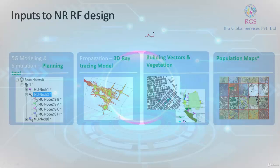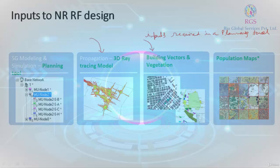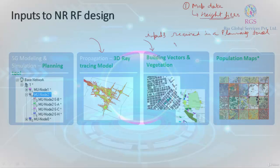First, let us see what inputs are required in a planning tool. The very first thing required is map data. Map data has various components, one of which is called height files. These are basically contour height files which will tell you the AMSL values at different points.